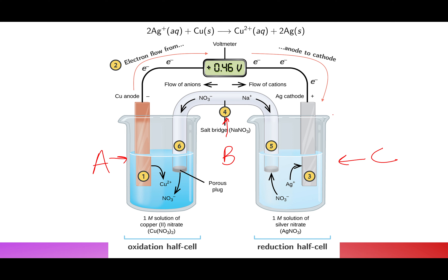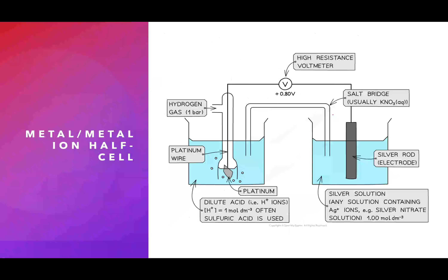When we use the standard hydrogen electrode — for instance, to find the voltage of Fe²⁺/Fe³⁺ — we can use the same platinum electrode in both. Let's look at how the hydrogen electrode is set up when finding the electrode potential of silver specifically.